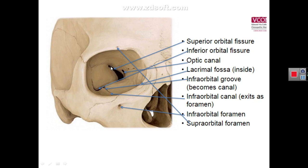In between the lateral and superior wall, there is a fissure in the posterior part of their junction called the superior orbital fissure, which connects the orbit with the middle cranial cavity. The inferior wall is formed by the zygomatic bone and the maxilla, and there is also a fissure between the inferior wall and the lateral wall called the inferior orbital fissure. This inferior orbital fissure connects the orbit anteriorly with the infratemporal fossa and posteriorly with the pterygopalatine fossa.